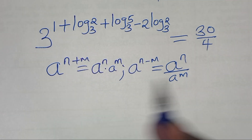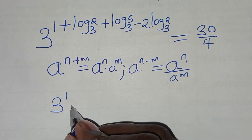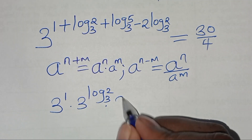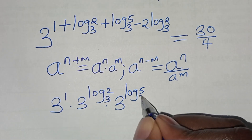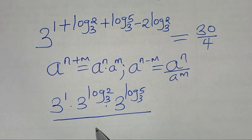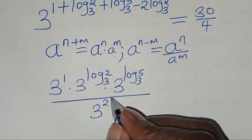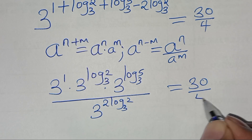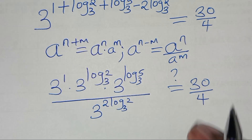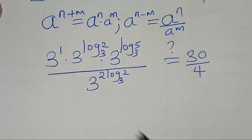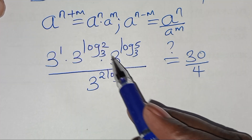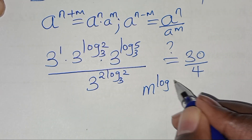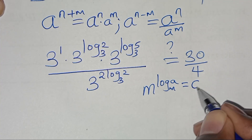Applying these two exponent properties, we have 3 to the power 1, times 3 to the power log₃2, times 3 to the power log₃5, divided by 3 to the power (2 log₃2). This is supposed to give us 30 over 4. Now 3 to the power log₃2 and 3 to the power log₃5 are each in the form of m to the power log_m(a), which gives a value of a.